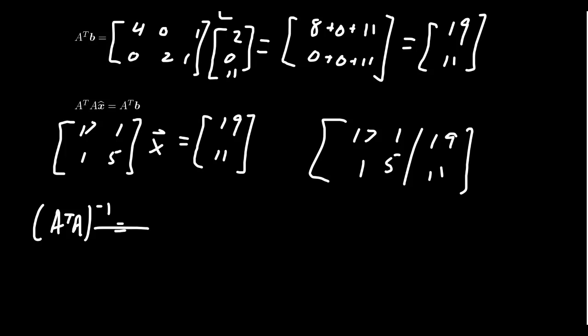To do that, you first calculate the determinant. So you get 17 times 5, which is 85, minus 1 times 1, which is 1. And then to calculate this, you swap the diagonal entries. So 5 and 17. You negate the off-diagonal entries here. And so you get 1 over 84 times the matrix 5, negative 1, negative 1, and 17.